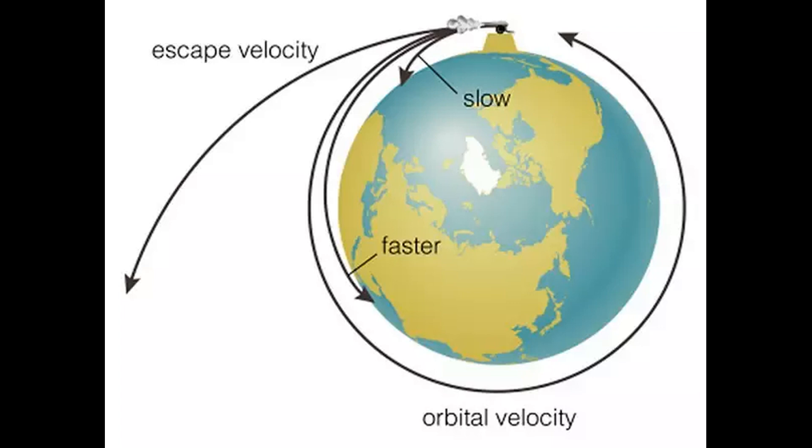Mangalyan is put into Earth's orbit as soon as it gets separated from the payload ferry. When the spacecraft is away from the Earth, its velocity decreases, and the velocity of the spacecraft increases when it is closer to the Earth, because of Earth's gravitational pull.